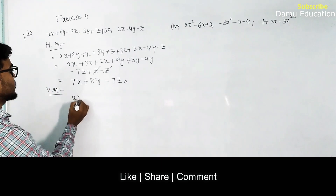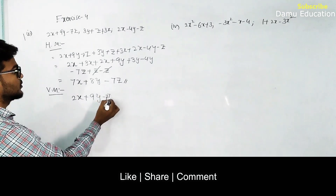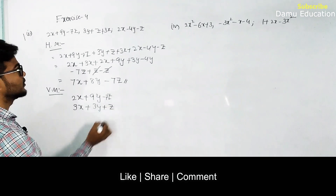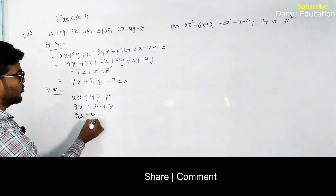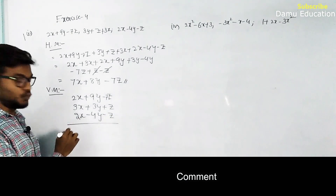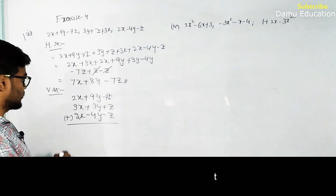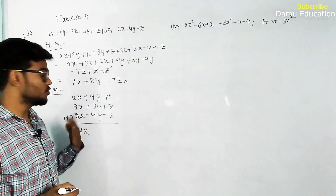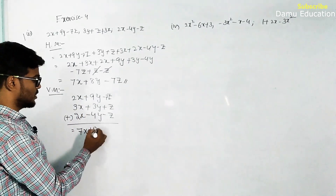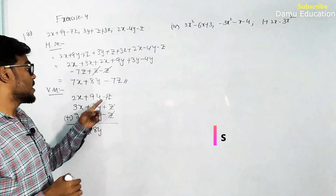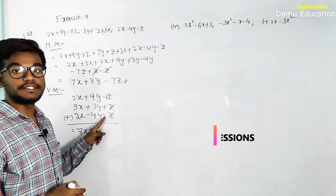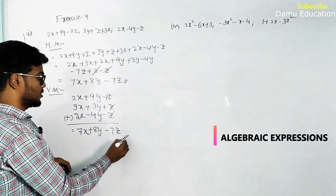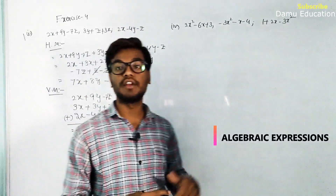For the vertical method, write 2x plus 9y minus 7z, then 3x plus 3y plus z, then 2x minus 4y minus z. Adding: 2 plus 3 plus 2 gives 7x, 9 plus 3 minus 4 gives 8y, and minus 7z plus z minus z gives minus 7z. Both vertical and horizontal methods give 7x plus 8y minus 7z.